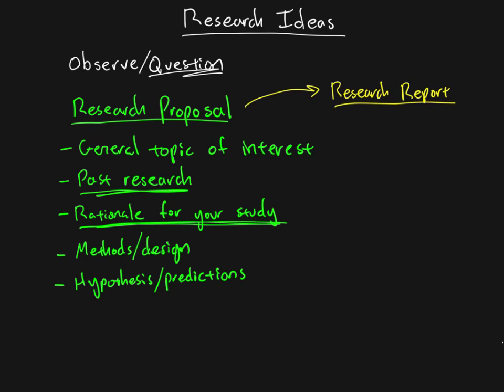So you take your proposal, edit it, add the actual results that you found, and add on to that to discuss those results — and that essentially turns into your research report. If it turns out well, you might then submit it to a journal, and the research report might actually be what gets published in a scientific journal. Normally you propose your research, it gets approved, you decide to proceed, collect your data, and that leads to your research report.